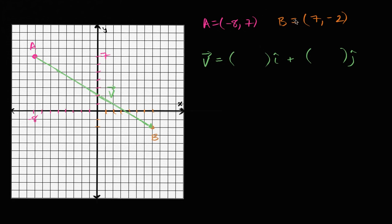And our Y component we could just view as the change in Y from the initial point to the terminal point. So we finish at the terminal point, that is negative two, minus our initial Y, minus seven. So what does this give us? Seven minus negative eight is the same thing as seven plus eight, which equals 15.